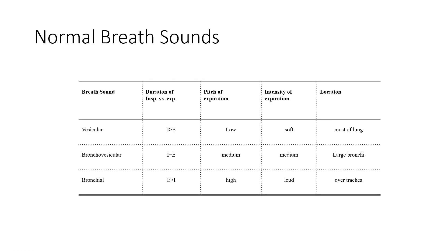Here's a graph showing where we should be hearing these sounds normally. Vesicular sounds should be heard in most of the lung segments, bronchovesicular sounds over your primary and large bronchi, and bronchial or tracheal sounds over the trachea.